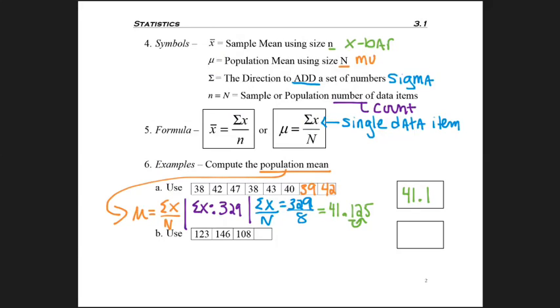So now I'd like you to go ahead and find the mean for problem 6b. And your missing number is 115. So why don't you go ahead and calculate it, maybe hit pause, calculate it, and then come back and check your answer.